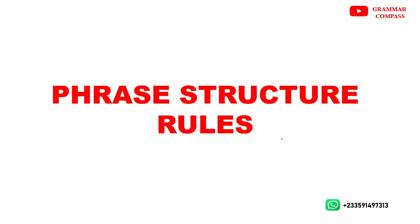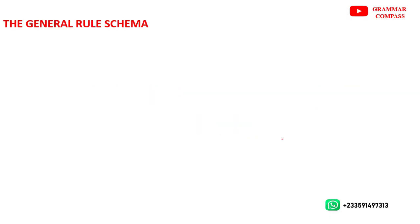Hi, welcome back. Let us continue our lesson on phrase structure grammar. In the previous lesson we talked about constituents, and then we looked at the two major ways of representing constituency in phrase structure grammar — that is, using trees and using the bracketed diagram. We learned that the bracketed diagram is very difficult to read, so we are sticking with using the tree method to represent constituency in phrase structure grammar.